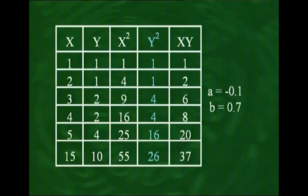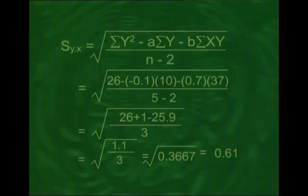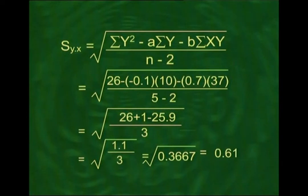The notation s_{y·x} means we are regressing Y on X; if we were regressing X on Y, we would write s_{x·y}. Applying this to our example: a column of y² is added to our existing table, and σy² = 26. The values a = −0.1 and b = 0.7 have already been found. Substituting all these quantities in the formula, the standard error of estimate for this problem comes out to be 0.61.